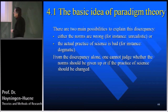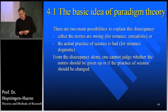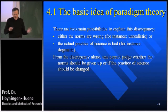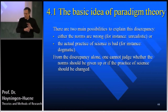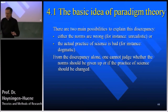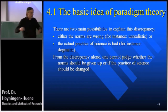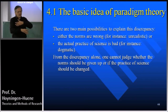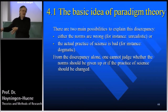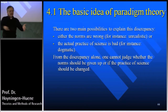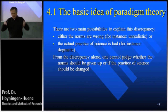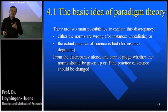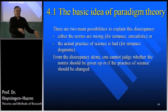From the discrepancy alone one cannot judge whether the norm should be given up or the practice of science should be changed. This is generally true: whenever you have certain norms and certain reality that do not fit, it's always open what is wrong. You may have a revolutionary theory of society with norms about justice that are not fulfilled in real society — there are always two possibilities: your norms may be bad, or society may be unjust.